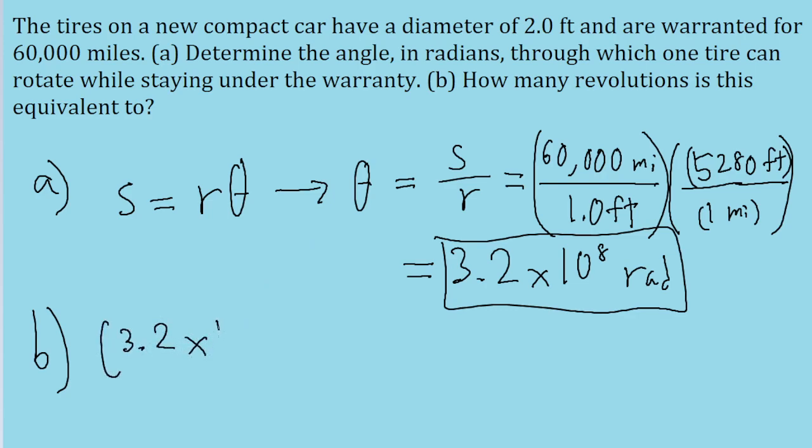So let's take the answer we got in radians, 3.2 multiplied by 10 to the power of 8 radians, though of course, realistically, you'd use whatever you actually got out of your calculator for part A, rather than just plugging in the rounded answer, and then using the conversion rate that states that there is one revolution for every two pi radians.